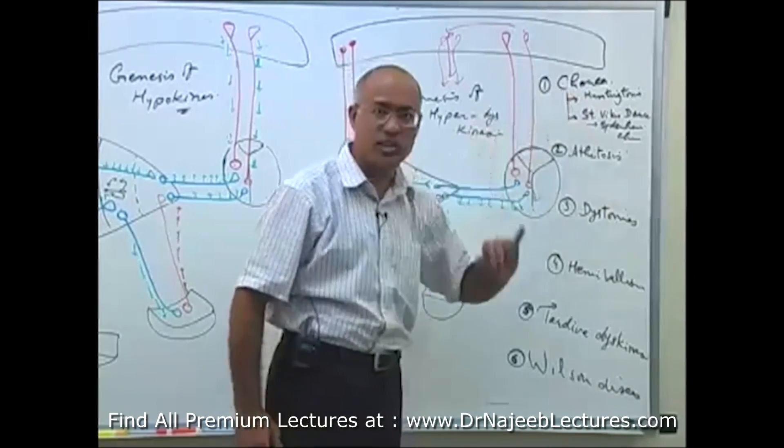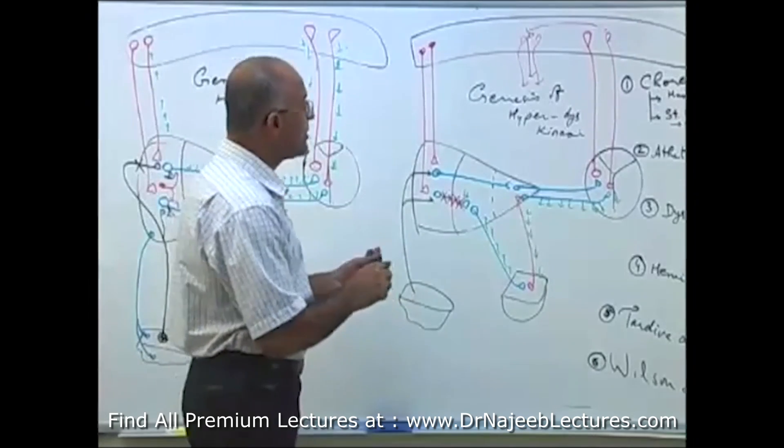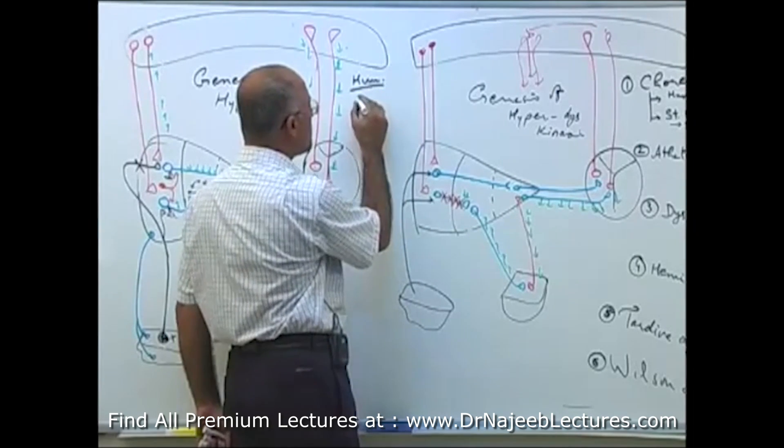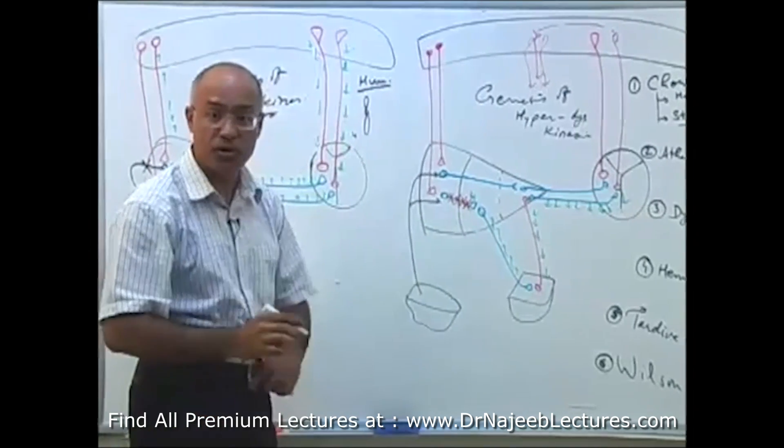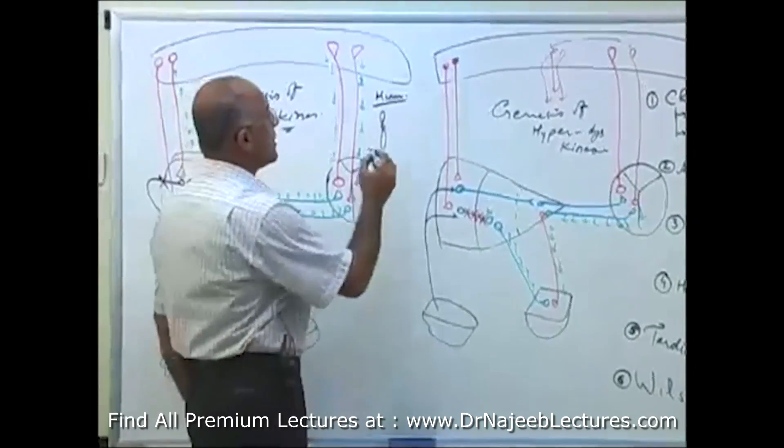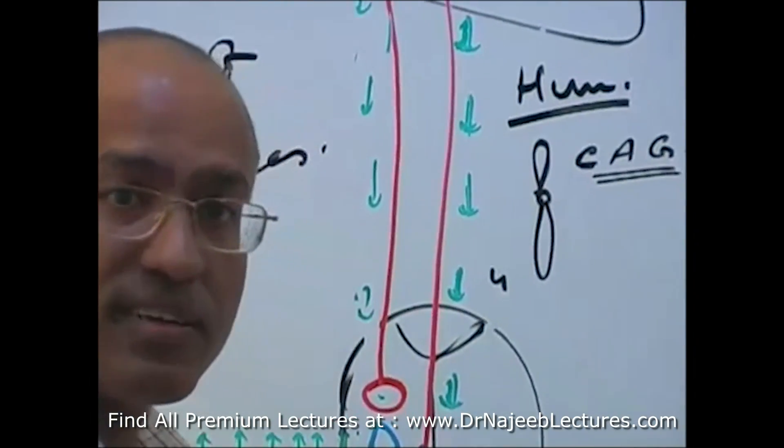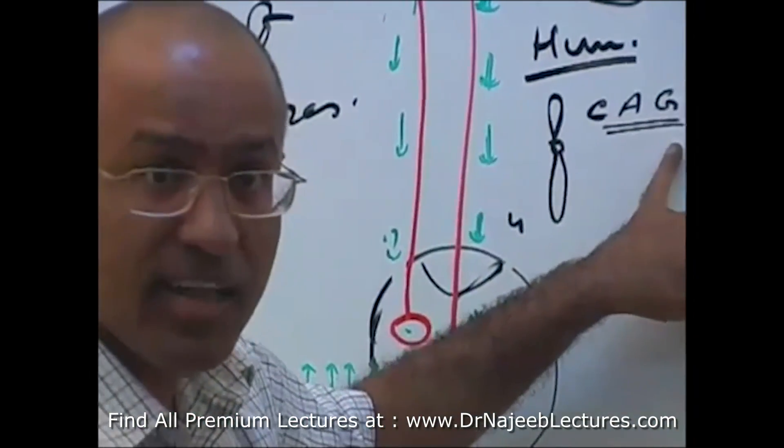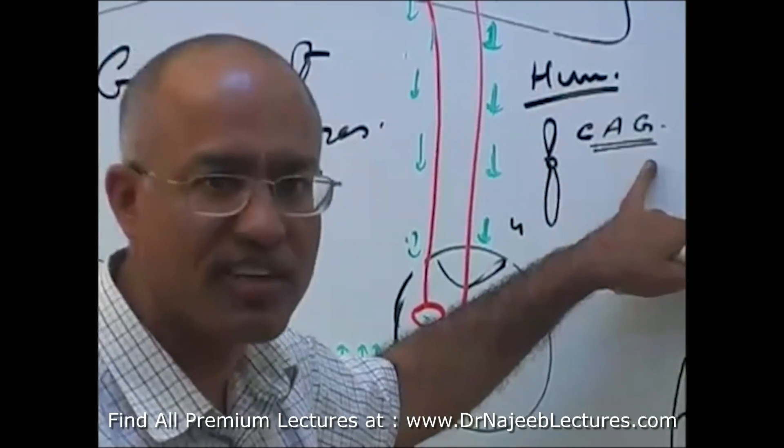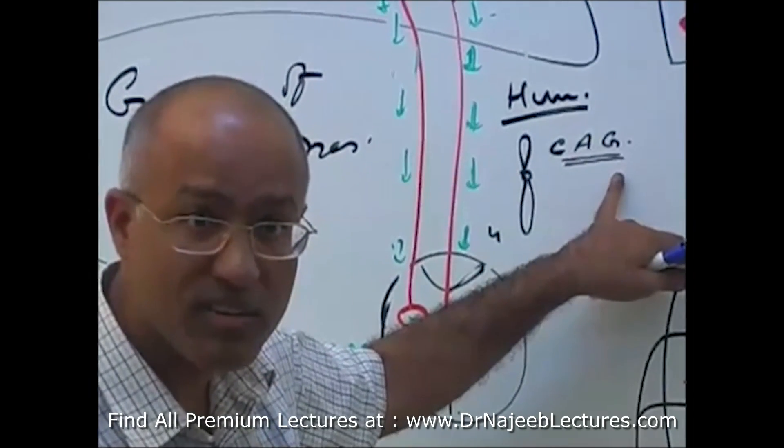One chorea is Huntington's chorea. You will study in detail in pathology. But I will just tell you, in Huntington's chorea, what happened, that problem is, it is inherited disorder, in Huntington's chorea, chromosome number 4. On chromosome number 4, there is a special gene, which is called Huntington gene. In this gene, trinucleotide repeat, CAG, they are amplified. Trinucleotide repeats are amplified, and then trinucleotide repeats are too much amplified, that produces an abnormal protein which is toxic. That toxic protein damages the GABAergic neuron, as well as cholinergic neurons.